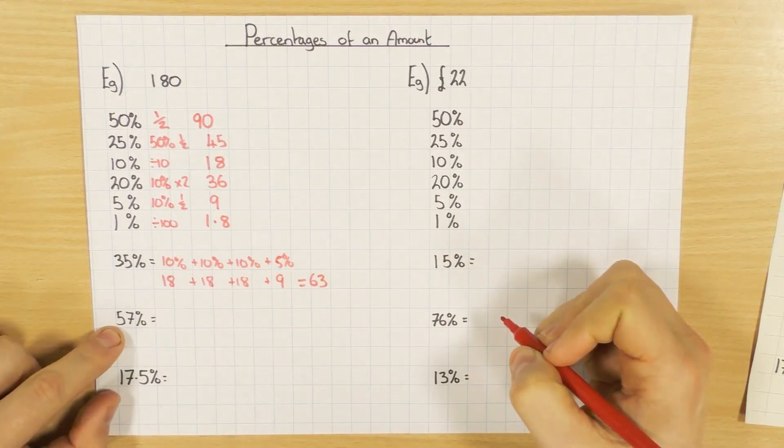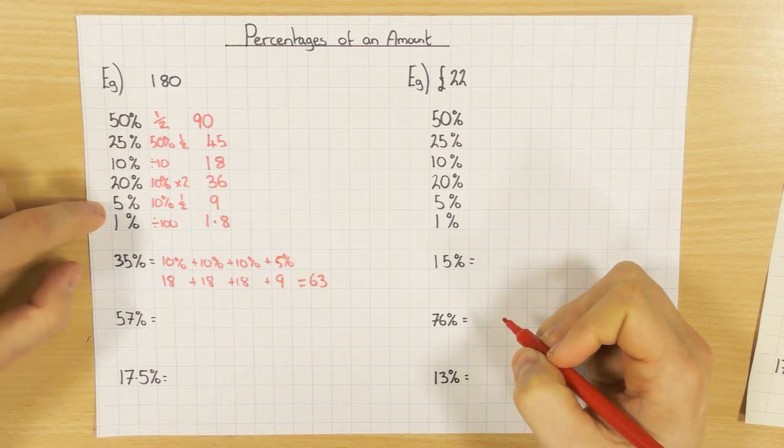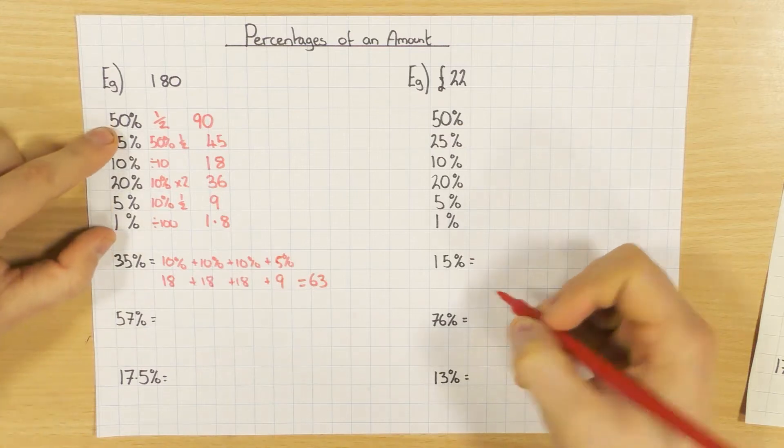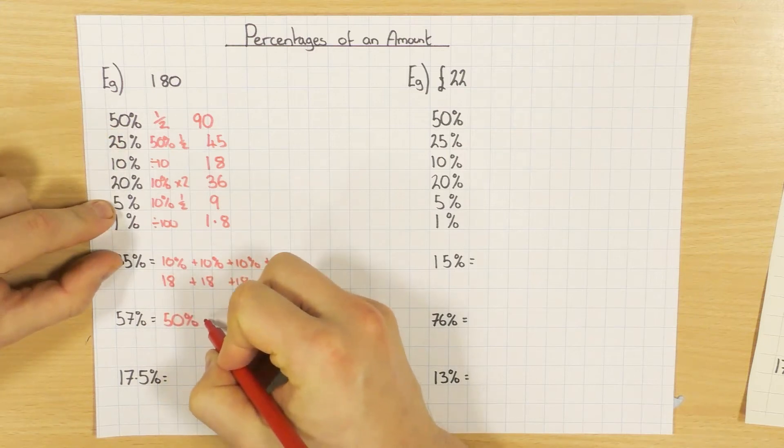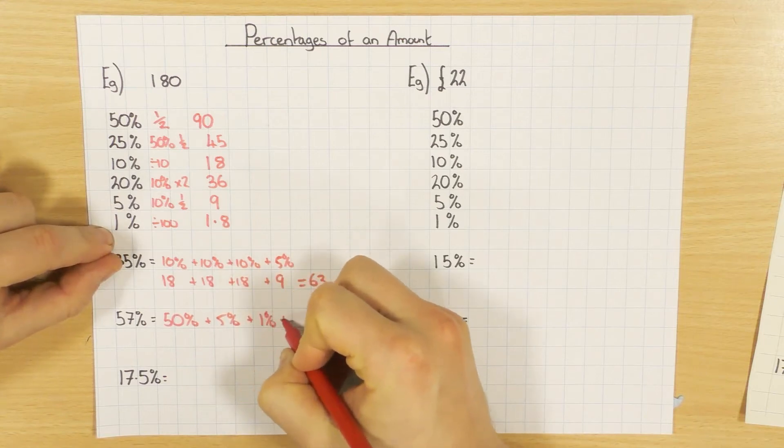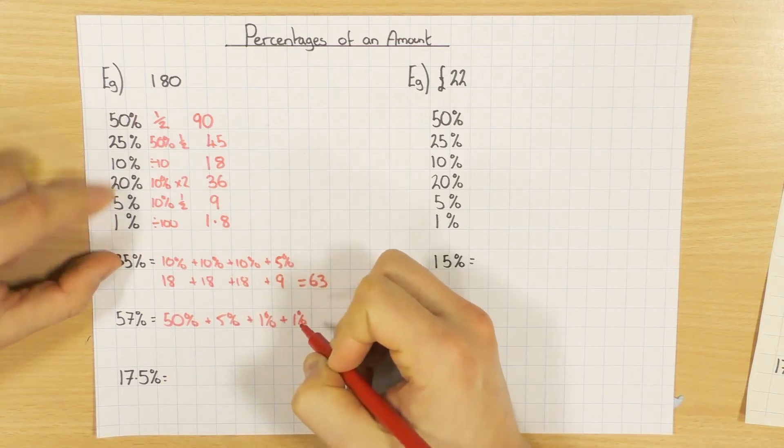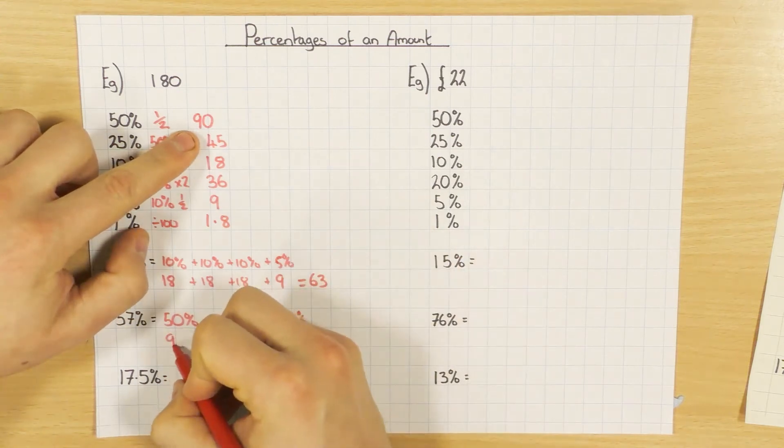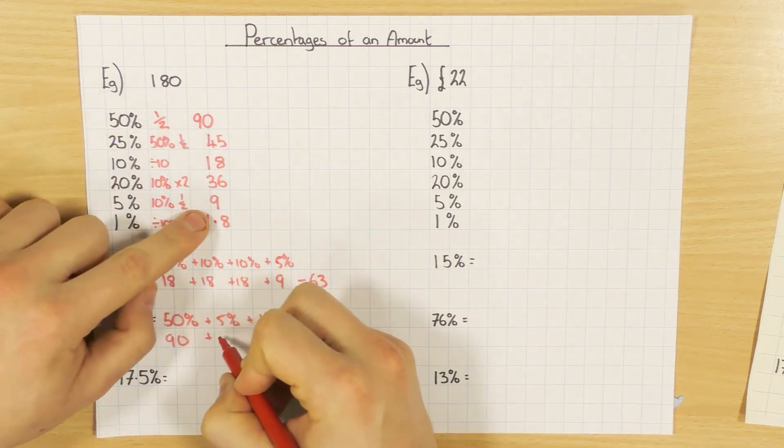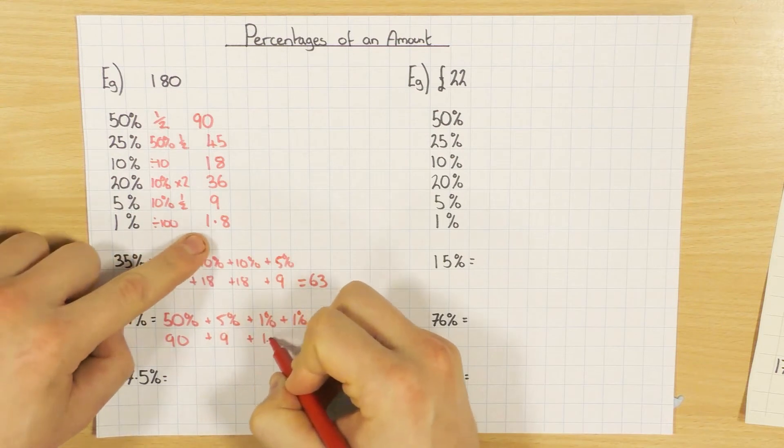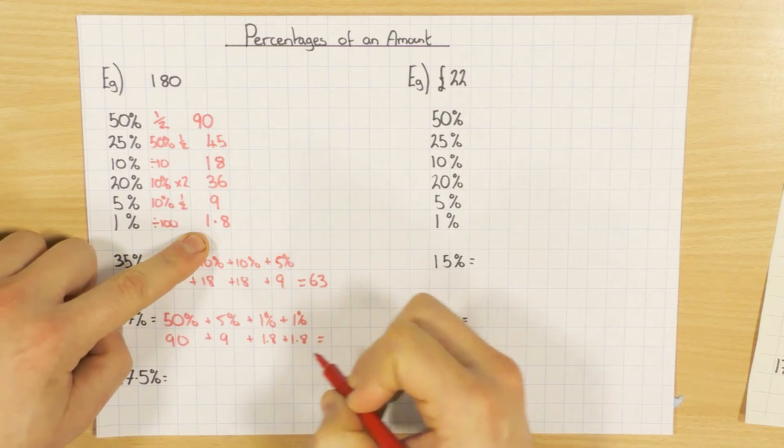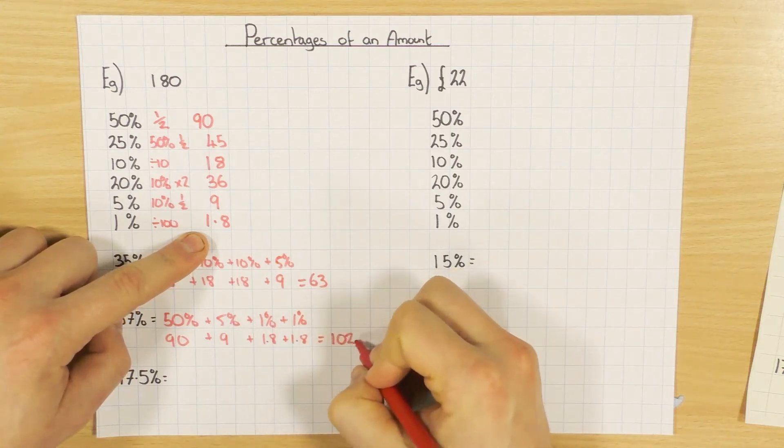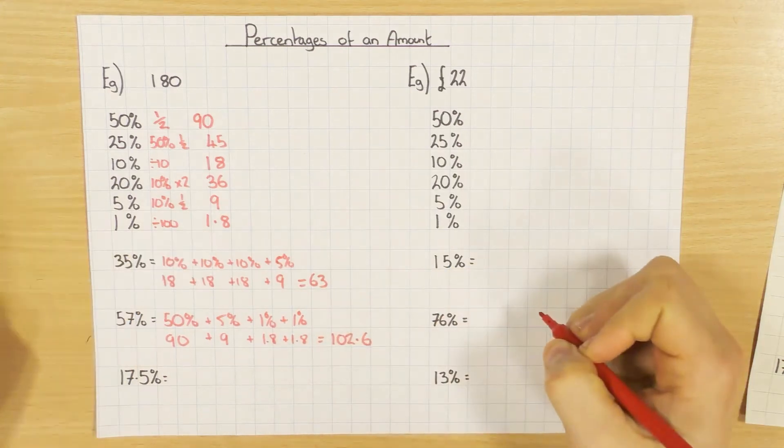Next one here, 57%. Well, I'm going to use 50%, a 5%, and then two 1%s. So I've got my 50% plus 5% plus 1% plus another 1%. That would be 90 plus 9 and then plus 1.8 plus 1.8. If you put it into a column or add it all up, you should have 102.6.